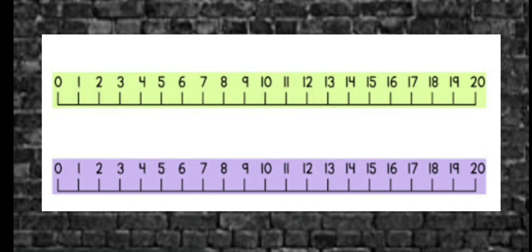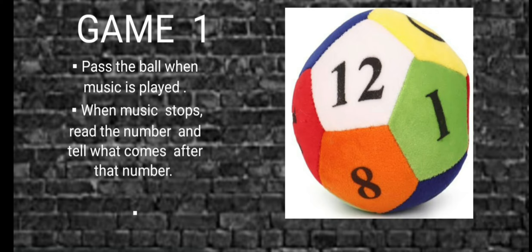Likewise, if you have to find number that comes just after number 9, you will first look at the number 9. Then you will move forward and look for the next number on the number line. So number 10 comes just after number 9. Now I hope this is clear to you. So let's play some interesting games.